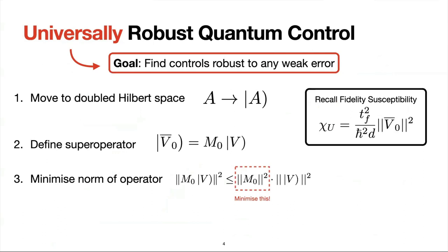Right. So this is what we're calling universally robust control. So you have some weak static error, and you don't even know what the error is. You just know that it's small. And so this is the kind of recipe that we came up for how you do this. So the first step is you move to some sort of doubled Hilbert space. So people talked about this during the week. So basically operators are represented by some kind of curly ket. They kind of become vectors. And then we define the super operator M_0. So this is a linear super operator which maps this perturbation operator V to our V0 bar. So remember, we're using V0 bar because this comes up in our fidelity susceptibility. And then you notice that if this linear super operator was small in the norm, if I make this small, the fidelity susceptibility is going to be small, regardless of V. So regardless of your choice of V, you're still going to be robust. You're still going to kill this second order term.